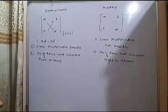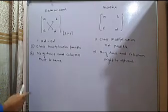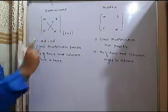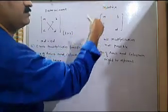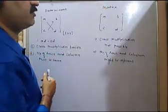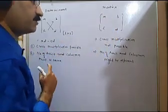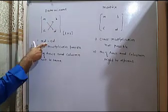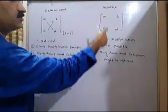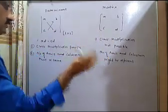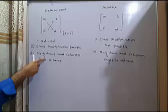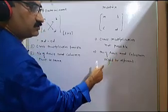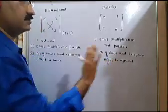Now students, we see the difference between determinant and matrix. In determinants, we arrange elements in rows and columns between 2 bars. But in matrices, we arrange elements in rows and columns within a rectangular bracket. In a determinant, cross multiplication — A times D minus C times B — is possible. But in a matrix, this is not possible. Another difference: the number of rows and columns must be the same in a determinant, but in a matrix the number of rows and columns may be different or the same.